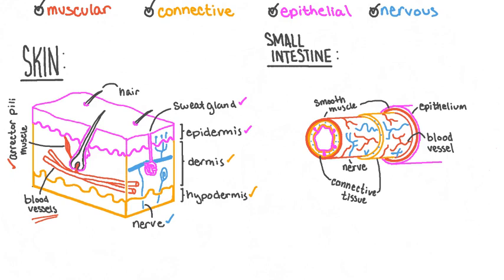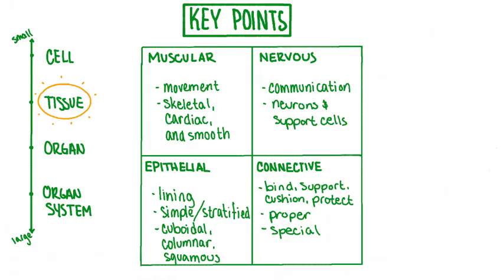Let's wrap up our lesson by reviewing what we've learned. In this video we learned about the four main types of animal tissues: muscular tissue, nervous tissue, epithelial tissue, and connective tissue. We learned about their structure, their functions, and examples of each, and then we learned how many tissues come together to form one organ.